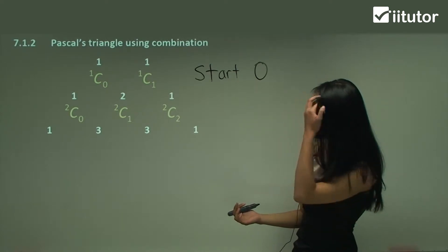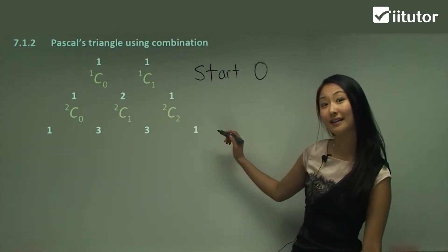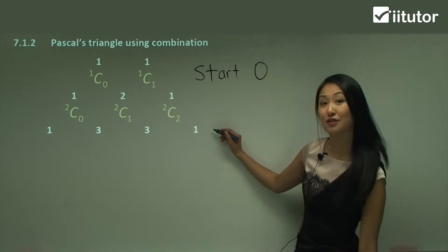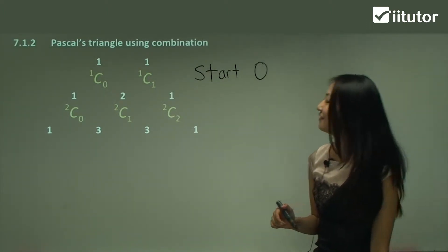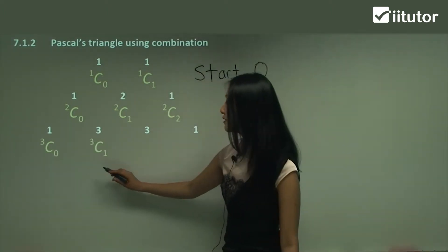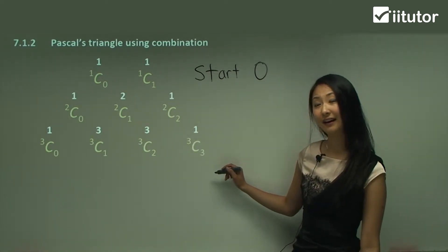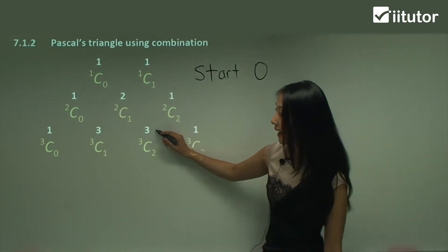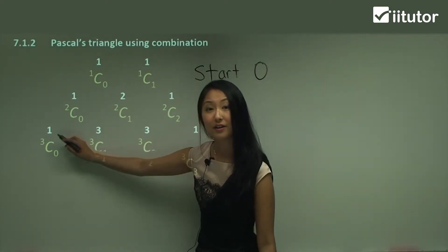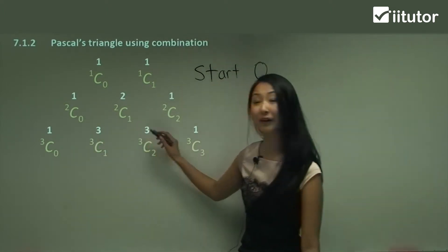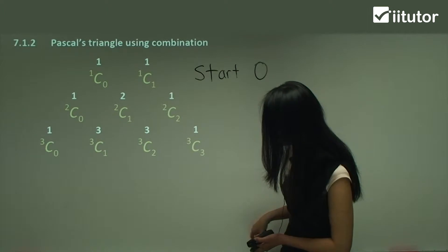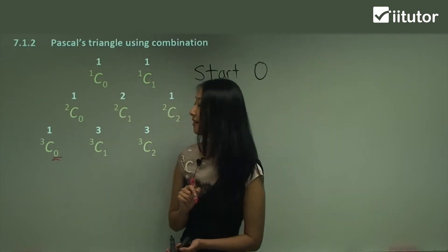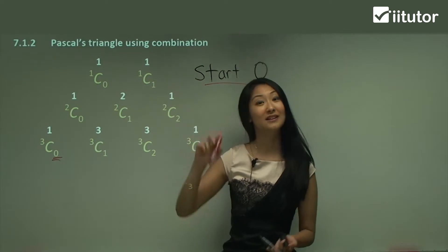For the next line — one, three, three, one — these are the coefficients for the index of three, so we start with 3C0, then 3C1, 3C2, 3C3. Put these into your calculator: 3C0 gives one, 3C1 gives three, 3C2 gives three, and 3C3 gives one. These combinations give you all four numbers. Note that although we call it the first term, we always start with zero.